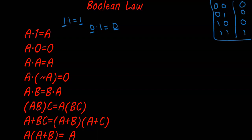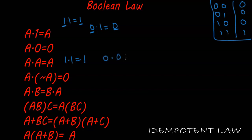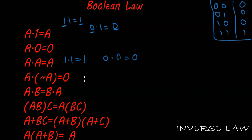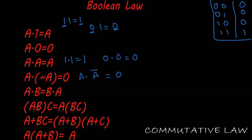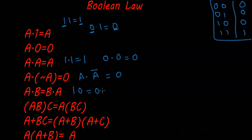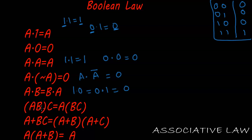Now a dot a equals a — the Idempotent Law: one dot one equals one and zero dot zero equals zero. Moving forward to the Inverse Law: a dot a-bar gives zero, since one dot zero equals zero and zero dot one equals zero. The Commutative Law: a dot b equals b dot a, so one dot zero and zero dot one both give zero.